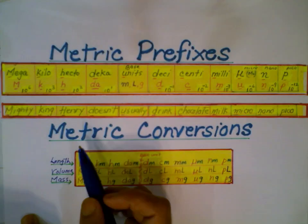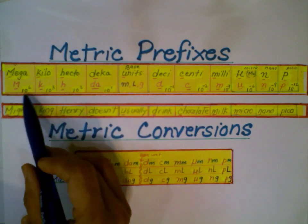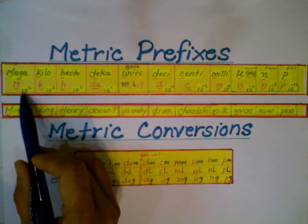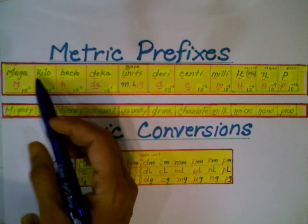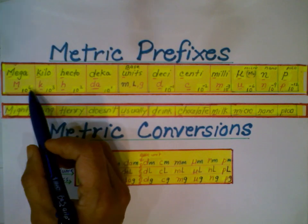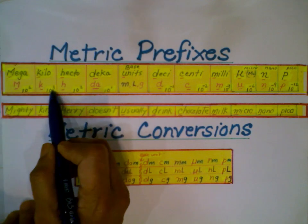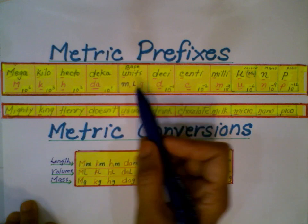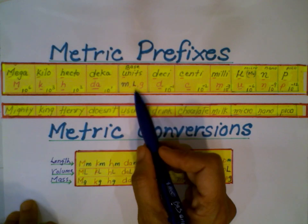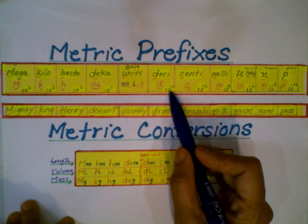All these prefixes have number values — they all stand for some power of 10. Starting from mega: mega stands for a million, which is 10 to the power of 6. Kilo is 1000, hecto is 100, deca is 10, and the base unit is just 1. Deci is 10 to the power of negative 1.